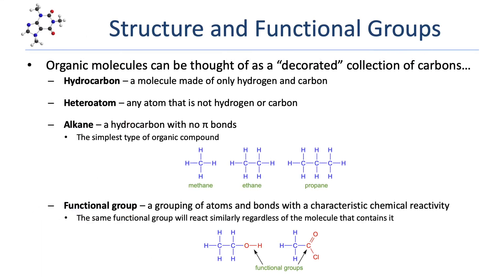When studying organic chemistry, it's convenient to think of organic molecules as really just a chain or collection of carbons decorated with other things. A hydrocarbon is a molecule made up of only hydrogen and carbon. Heteroatoms are other atoms — things like nitrogens, oxygens, and halogens — that can be attached to any of those carbons.